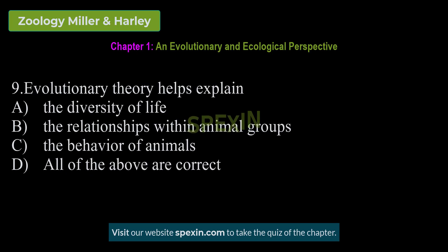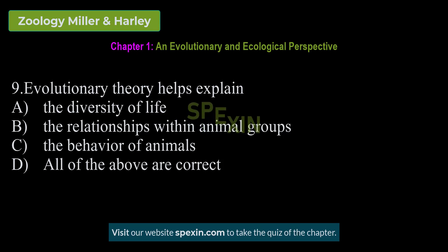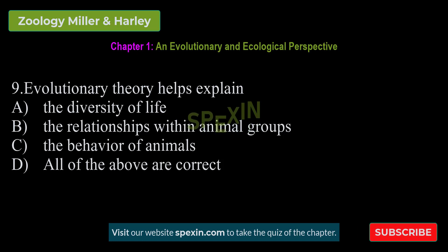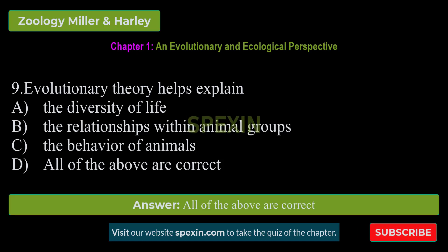Evolutionary theory helps explain: The diversity of life — The relationships within animal groups — The behavior of animals — All of the above are correct. Correct answer: All of the above are correct.